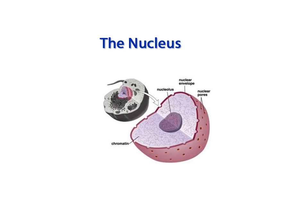We will start with the most obvious organelle in any eukaryotic cell: the nucleus. The nucleus is a membrane-bound organelle surrounded by a double membrane. It communicates with the surrounding cytosol via numerous nuclear pores.